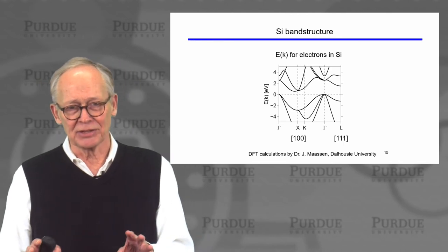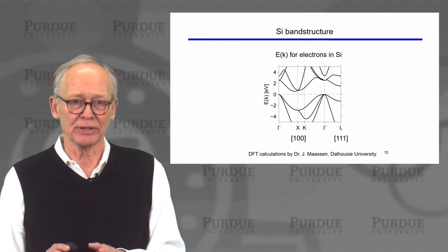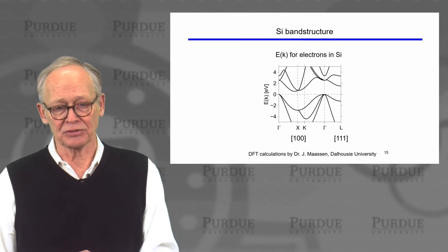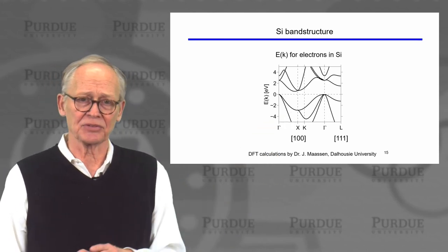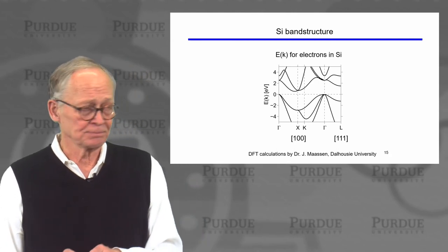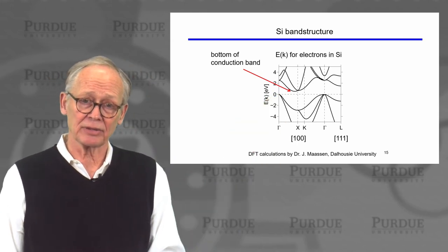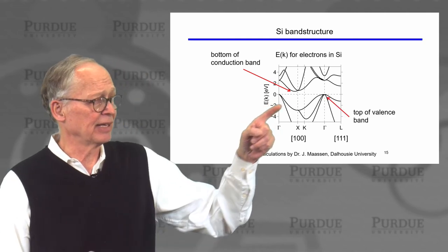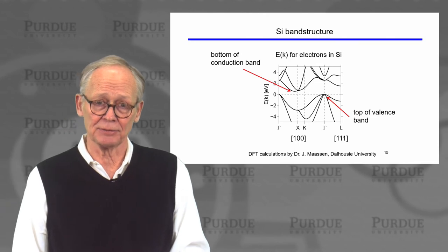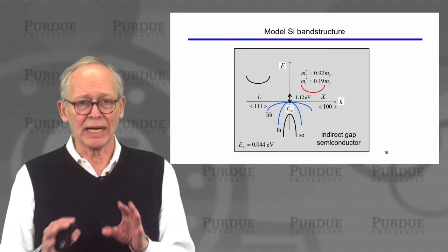In reality, crystal potentials are very complicated and 3D lattices are complex. There are well-developed techniques for computing E versus k in complex crystals, and for the most part these E-k structures are well-known. Here's an example of what it looks like for silicon, with E versus k plotted along various lines in the crystal lattice — it looks quite complicated. But electrons reside near the minima of the conduction band, and close enough to those minima that region looks like a parabola. Holes reside near the top of the valence band, and near that top we can also describe holes with a parabolic band structure. This leads to simplified model band structures that are widely used in semiconductor work.